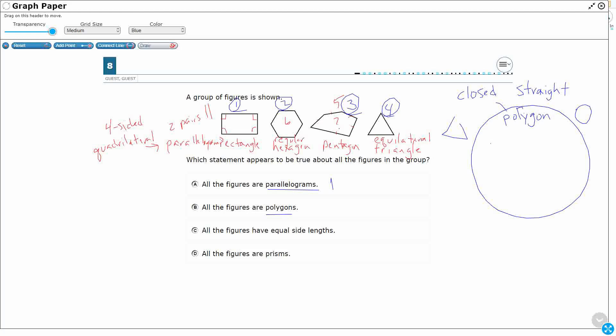Well, rectangles would definitely go inside there. Hexagons would definitely go inside there because they're closed and straight. That pentagon, I can't really draw it, but I'll try. And then definitely my equilateral triangle. They are closed with straight sides. Okay. So that's one, two, three, four. So I'm looking like that's the answer.